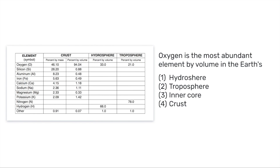Let's take a look at one more sample question. It says: oxygen is the most abundant element by volume in the Earth's what? Again, let's break down the question — we see that word 'abundant' again, and in this case we're referring to oxygen. We want to know in which of these spheres is oxygen most abundant by volume. Looking at the columns, I can immediately cancel out the crust percent-by-mass column because we're being asked about volume.